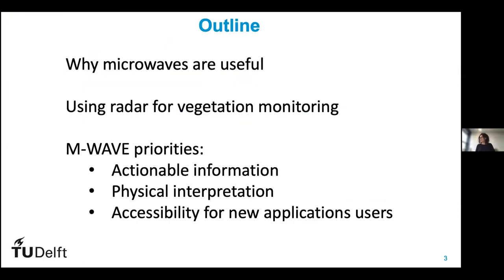When I was invited to give the presentation, I thought, well, that's a very broad topic. Where do I start? And I also realized it's a very broad group. What I plan to do in the next half hour is give a bit of an overview into microwave — for people who aren't familiar with microwave remote sensing, a short introduction on what they are and why they're useful. Then I want to show examples of how we use radar specifically for vegetation monitoring, using ASCAT data for the Amazon area and also some recent research with Sentinel-1, and also some ground-based experimental campaigns.